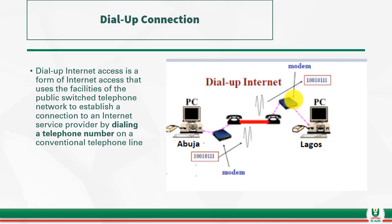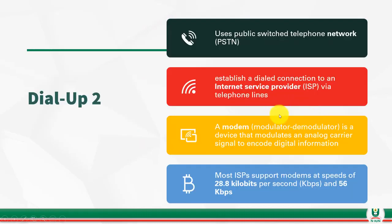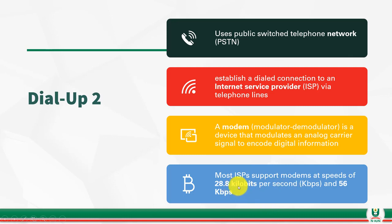With dial-up connection, you dial a telephone line, connect to another telephone somewhere, and you are able to communicate. It uses the public switched telephone network to establish a dialed connection to an ISP — Internet Service Provider — who is responsible for managing the network and transmission of data. A modem, which stands for modulator-demodulator, converts an analog signal to a digital signal so the computer can understand it. Most ISPs support modems at a speed of 28.8 kilobits per second up to 56 kbps.